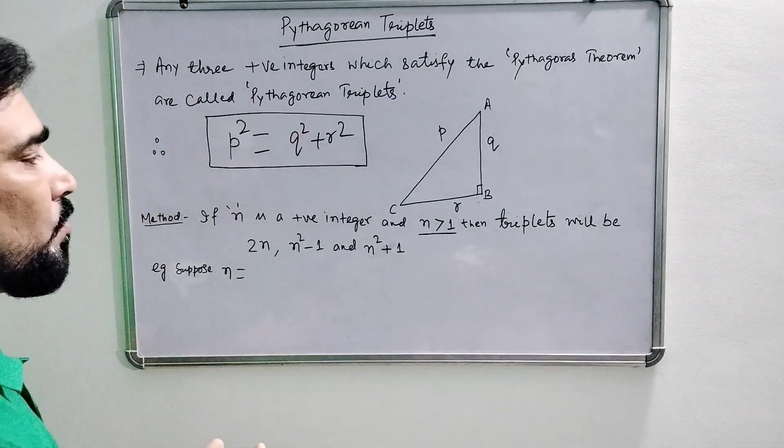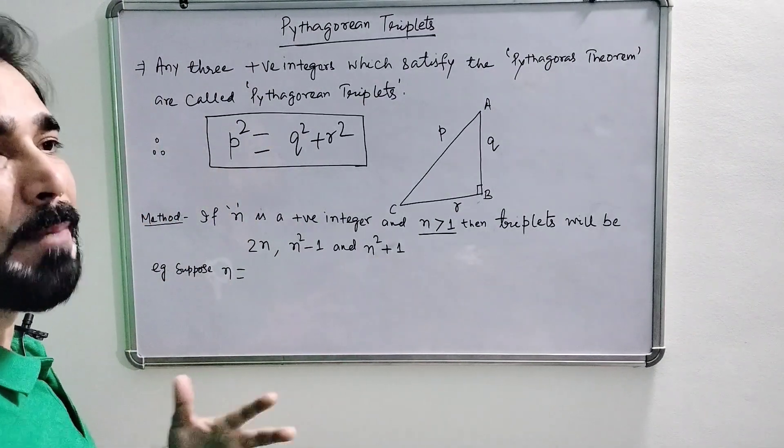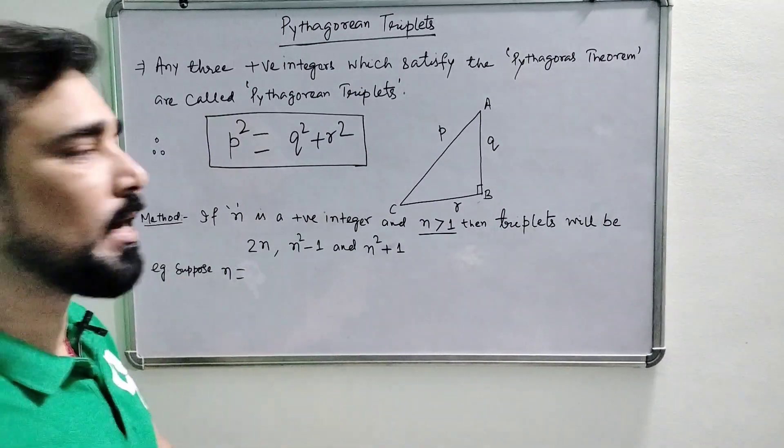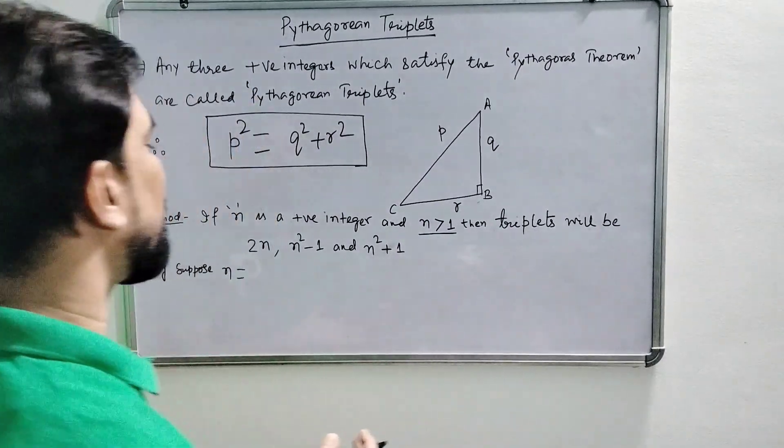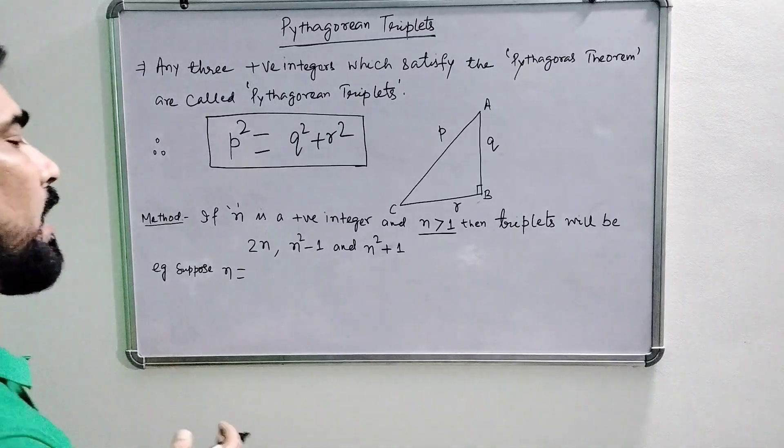Now there is an easy method to find many triplets. Suppose N is a positive integer greater than 1, then the triplets will be 2N, N² - 1, and N² + 1.